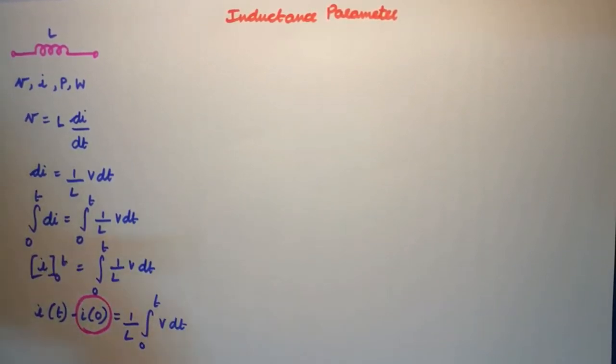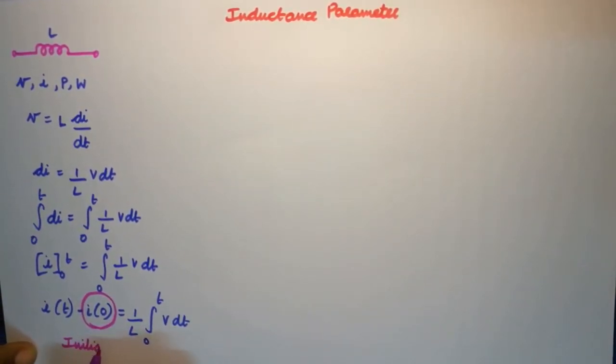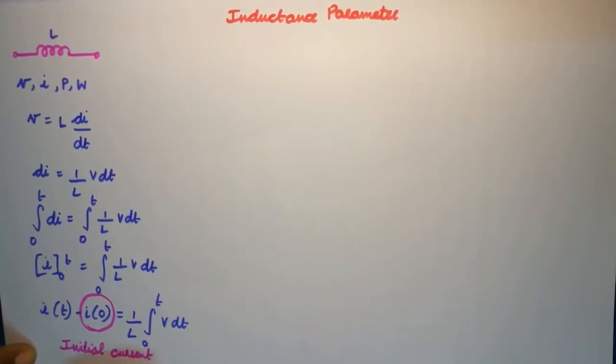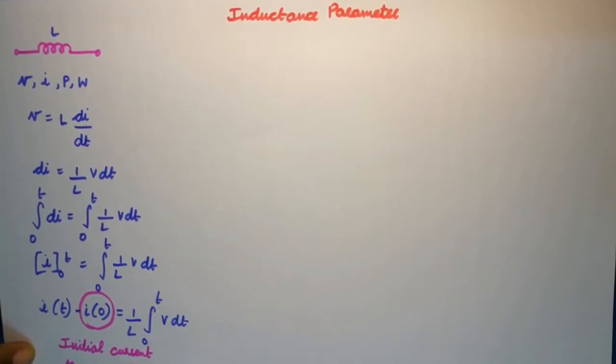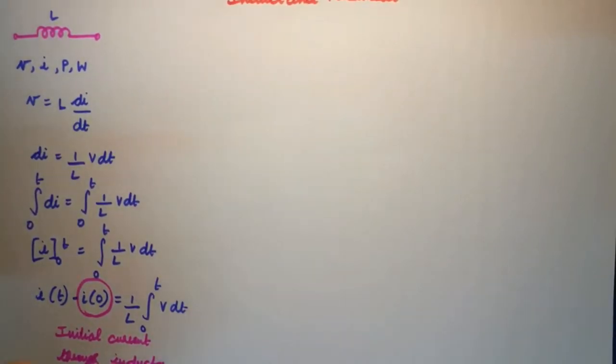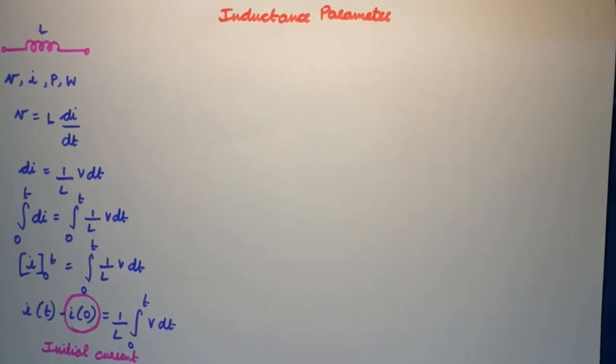So i of 0 would be the initial current in the inductor. Now next, when we see, let's move on to the power part.